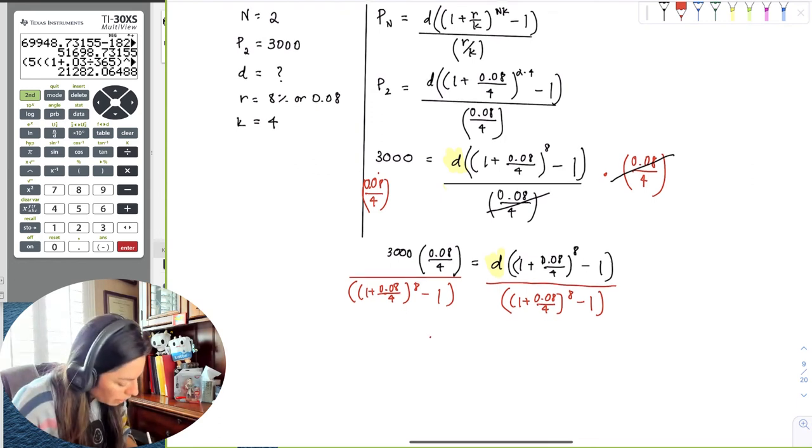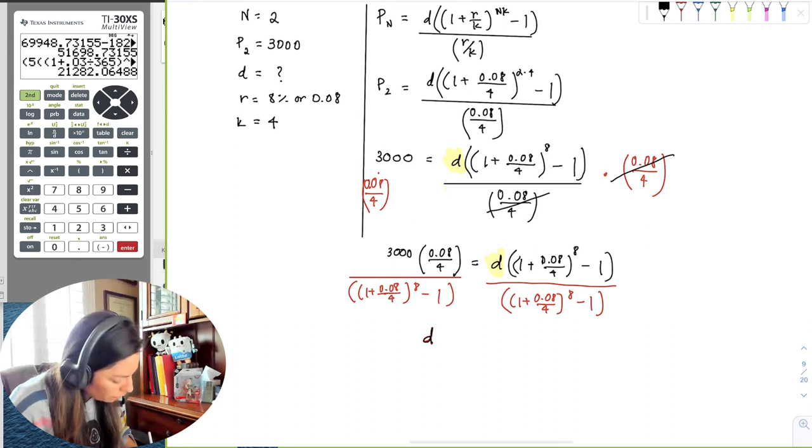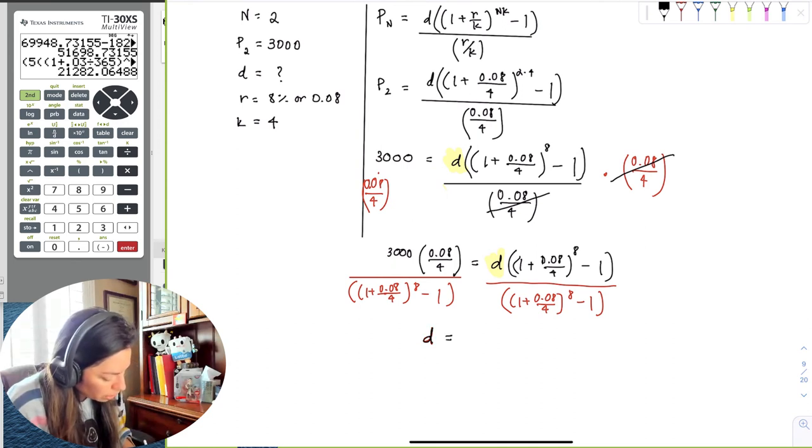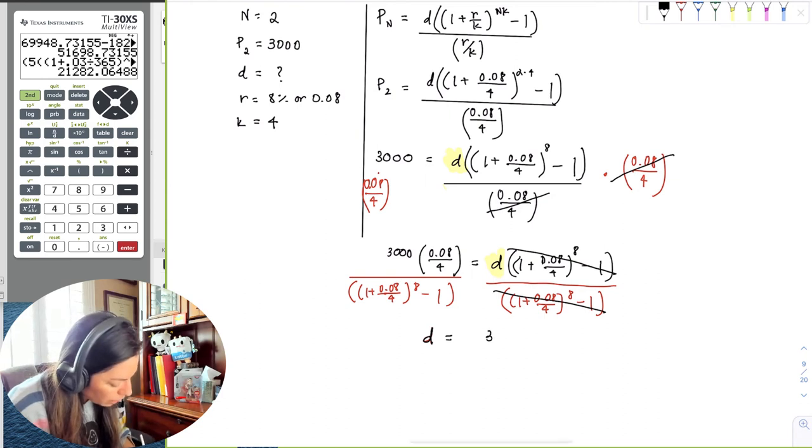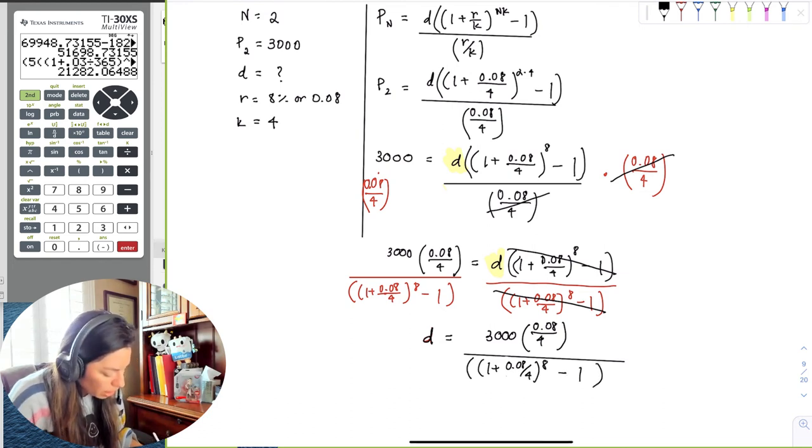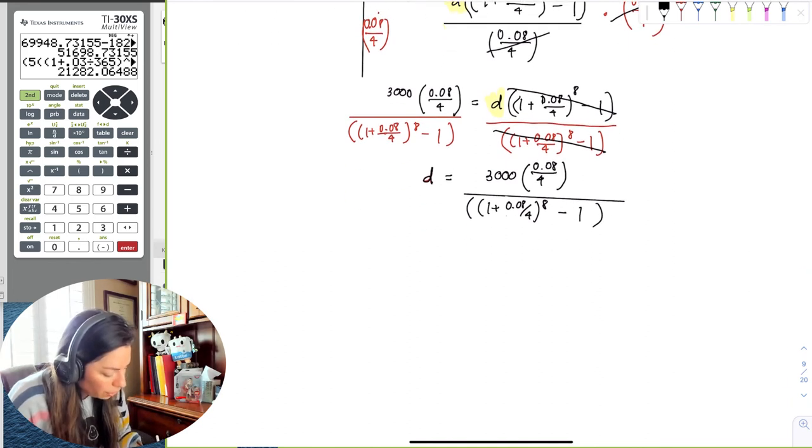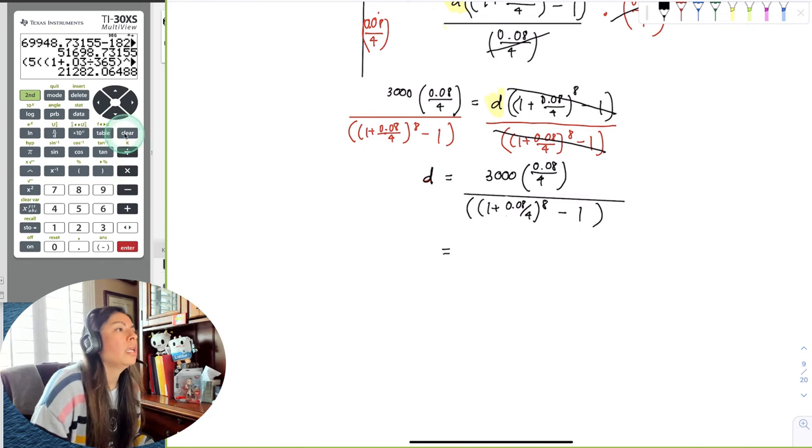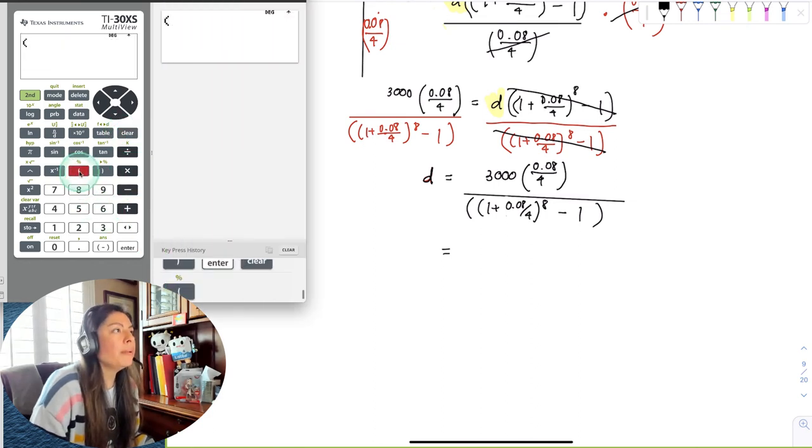I know that seems overwhelming because it's such a big piece of numerator to divide by, but you will be able to do all of it in the calculator. So don't worry. Your calculator does all that hard work. Your goal is just to see how much Mr. DJ would want to deposit every quarter to get $3,000 in two years at an 8% interest rate. So now D is going to be equal to 3,000 times the R over K in the numerator, all divided by 1 plus R over K to NK minus 1 in the denominator.